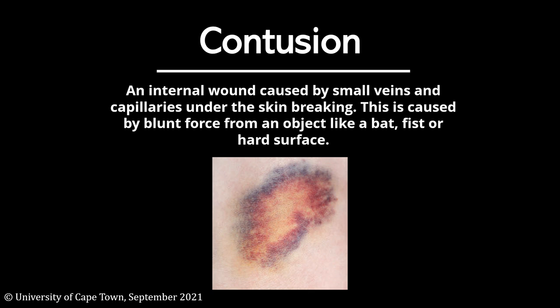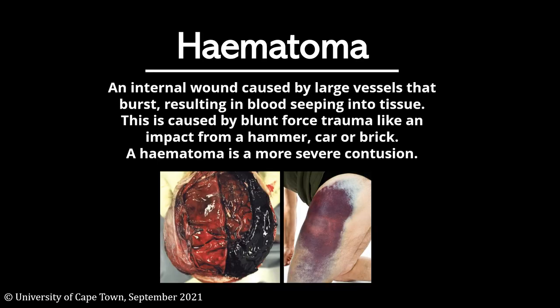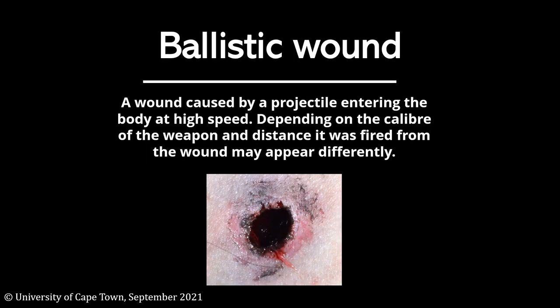A contusion is caused by blunt force from an object like a bat, fist, or hard surface. A hematoma is an internal wound caused by large vessels that burst, resulting in blood seeping into tissue. This is caused by blunt force trauma like an impact from a hammer, car, or brick. A hematoma is a more severe contusion.